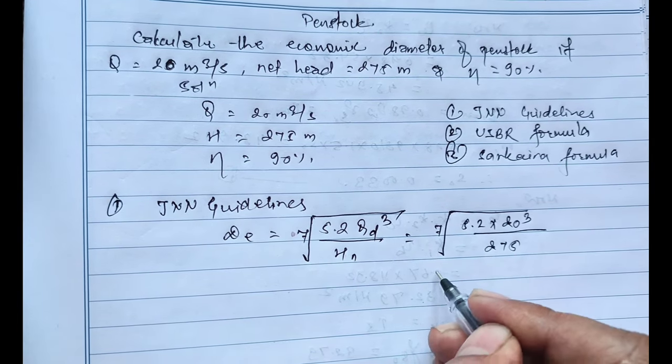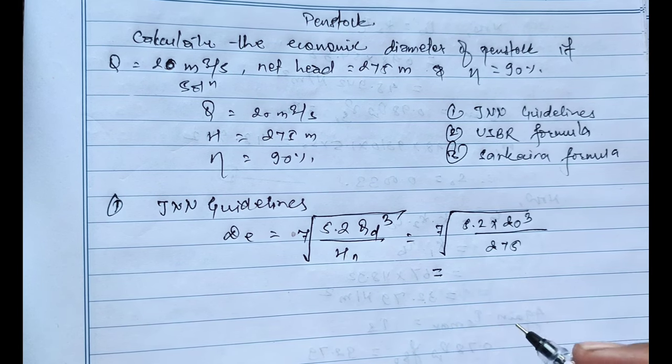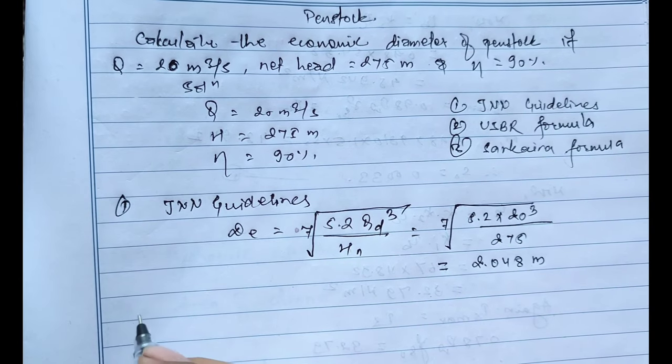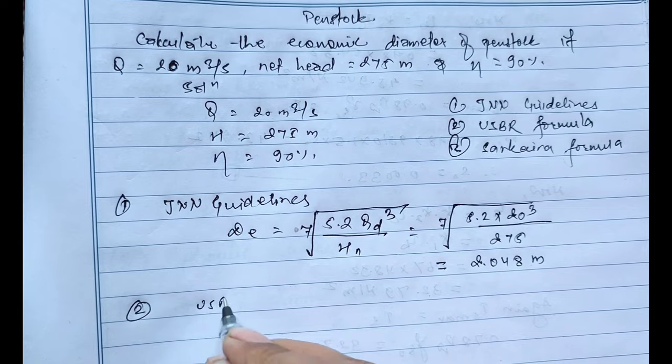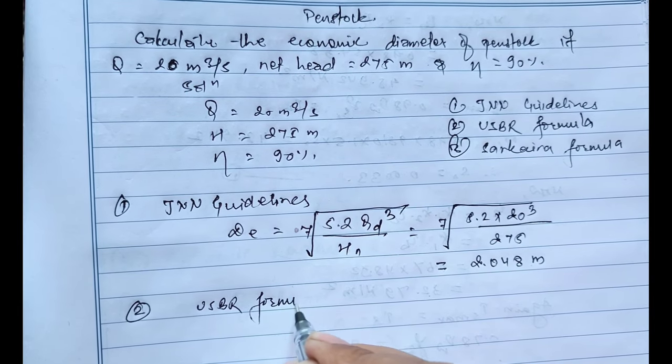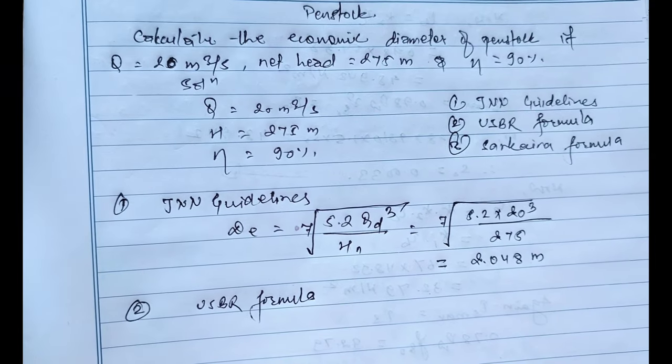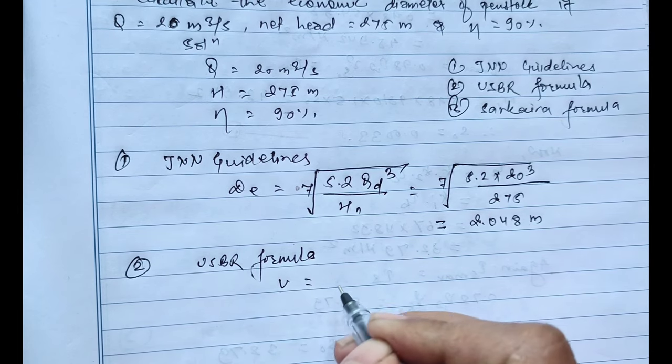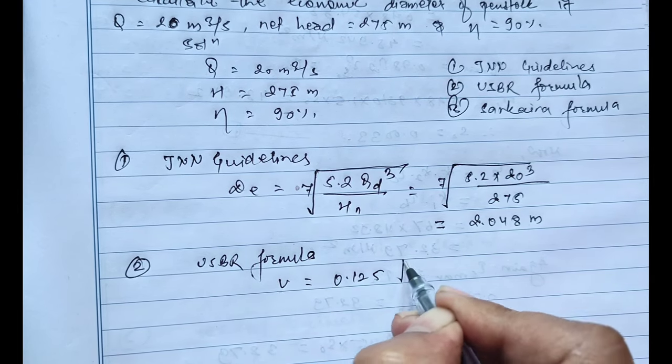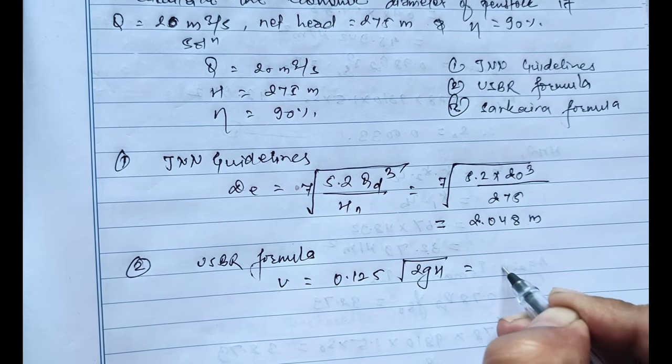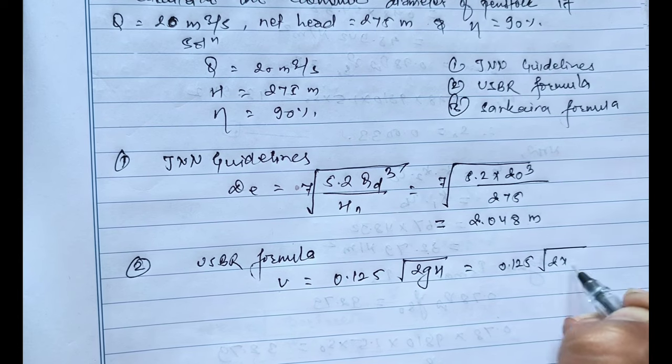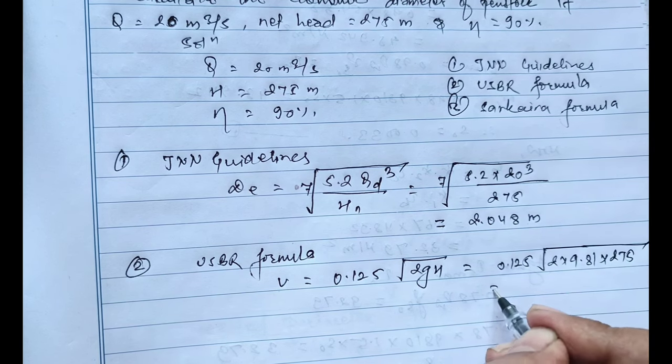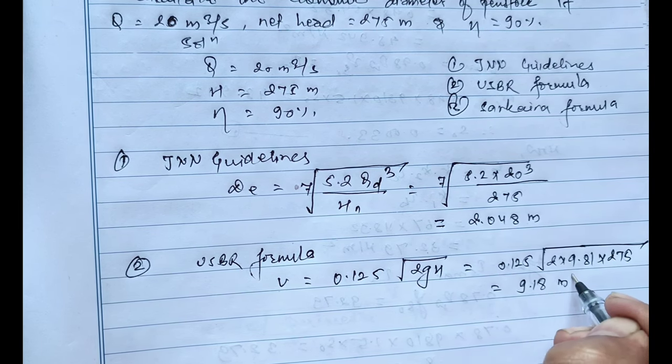Now using the USBR formula, the economic diameter can be found using first V equals 0.125 root over 2gH equals 0.125 root over 2 into 9.81 and the head is 275. On calculating this, the value will be 9.18 meter per second.